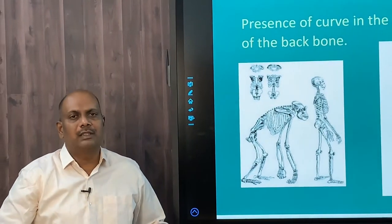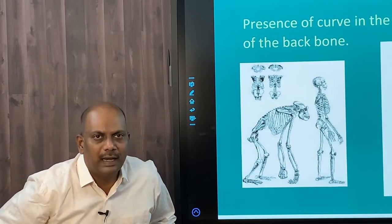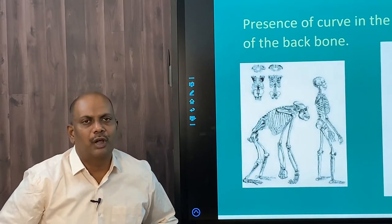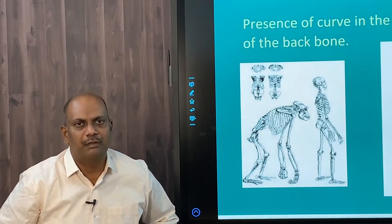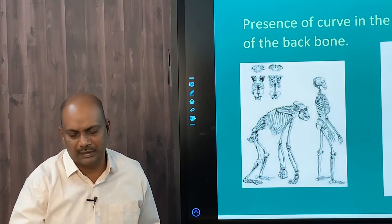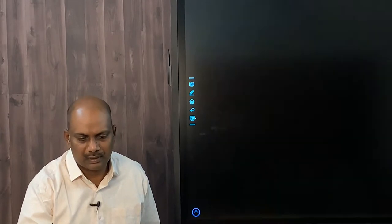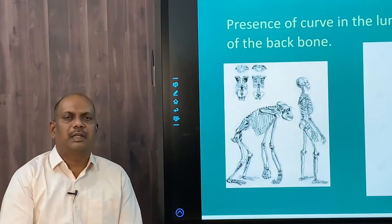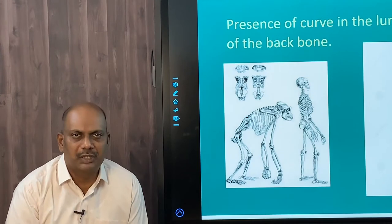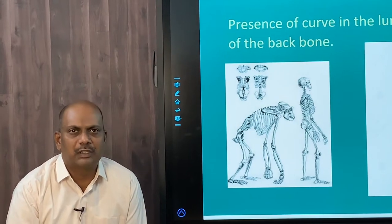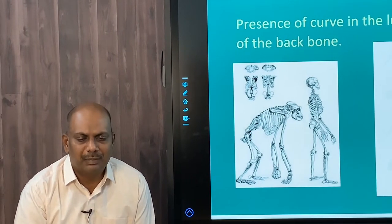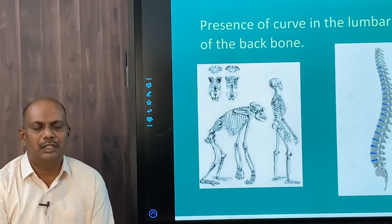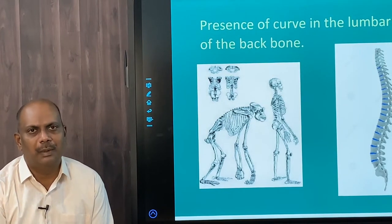The more central position of the foramen magnum of Australopithecus shows that Australopithecus were bipedal — they used only two hind limbs for walking and not the forelimbs; the forearms were free. The next post-cranial aspect is the presence of a curve in the lumbar region of the backbone.